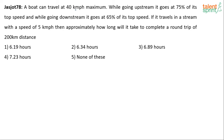The maximum speed that the boat can achieve is 40 km per hour. While going upstream, it goes at 75% of its top speed — meaning 75% of 40, which is 30 km per hour. So we can conclude that upstream speed is 30 km per hour.